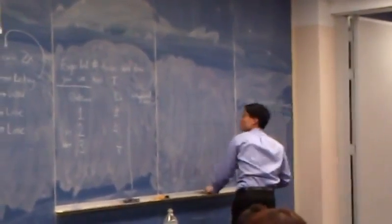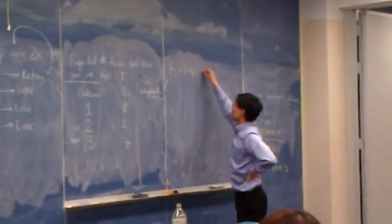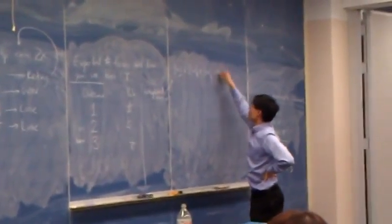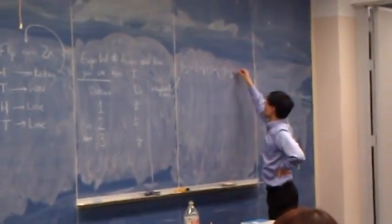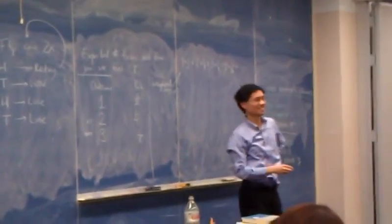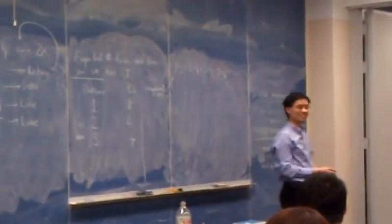So it's going to be 1 times a half plus 2 times a quarter plus 3 times an eighth plus 4 times a sixteenth plus and so on. What's that? How do I evaluate that? Is that the geometric sequence?